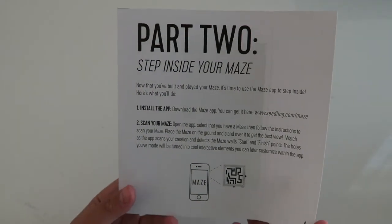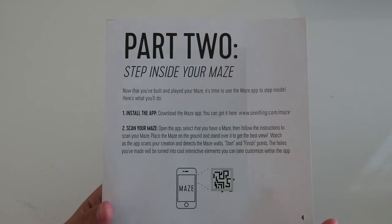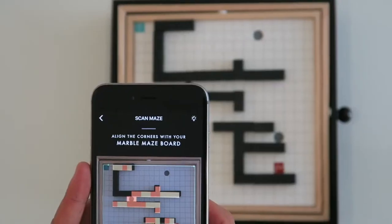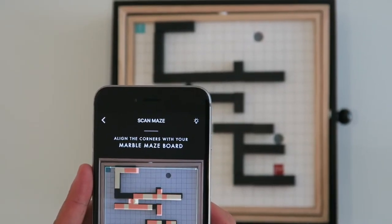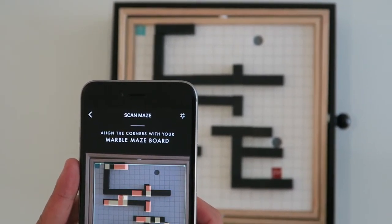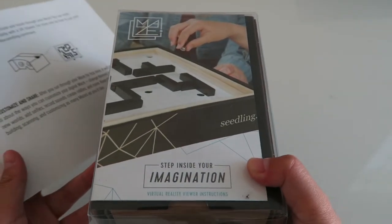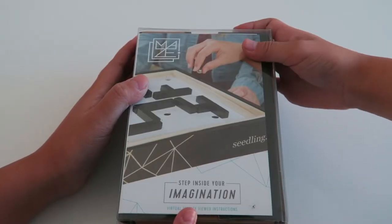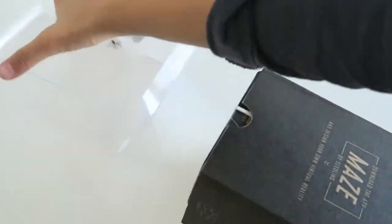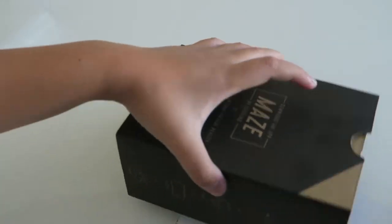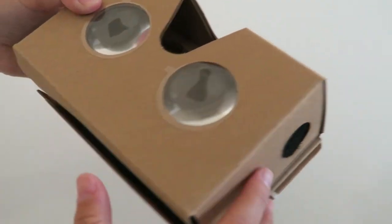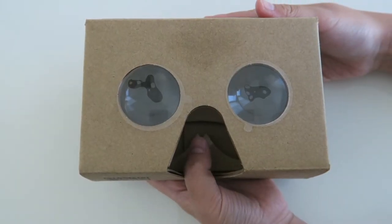So now we're moving on to part 2 and you can actually step inside your maze. So the first thing we're gonna have to do is install the app, then we're gonna scan your maze, and then you can step inside using this virtual reality viewer. So let's open our viewer. Okay so we're gonna slip this out, here's the virtual reality viewer.